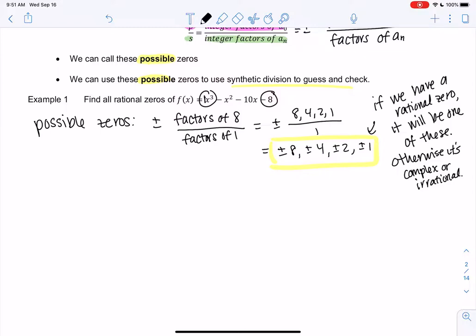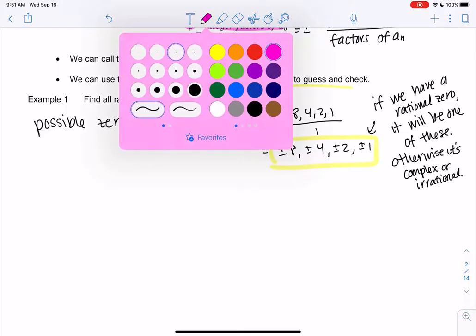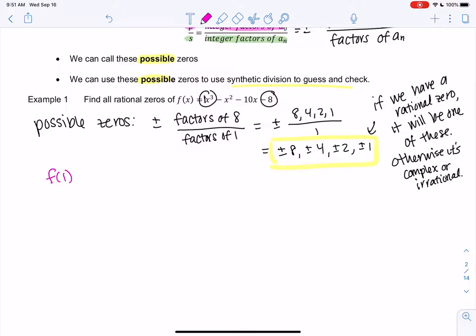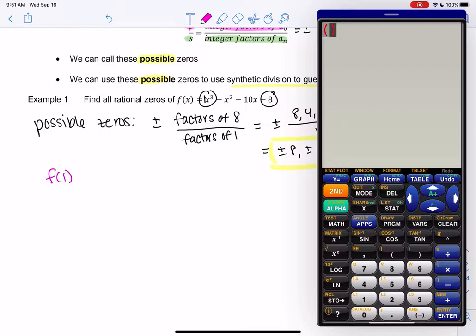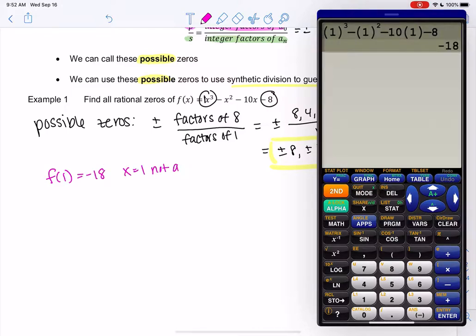Normally, what I do is I start plugging a couple numbers in. It doesn't matter which one. I usually start with smaller numbers because I find them easier, but it doesn't matter. So we'll just plug a couple in really fast, like f of 1. If we want to do this a little faster, I'm just going to pull out the calculator to make it go a little faster. So we'll do 1 cubed. You can use any scientific calculator. You do not need a graphing calculator at all. 1 squared is just 1. Minus 10 times 1, minus 8, which is negative 18. So 1 is not a zero. Let's try negative 1. So negative 1 is a zero.